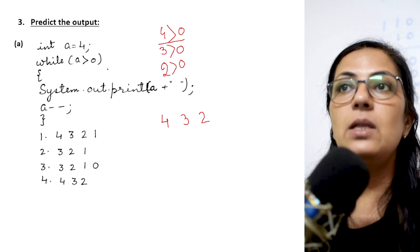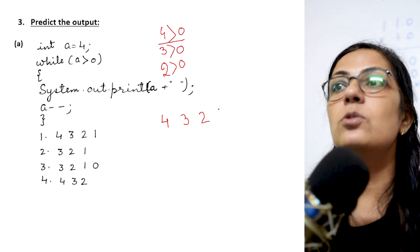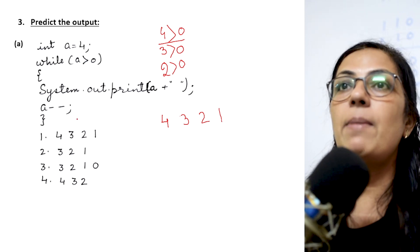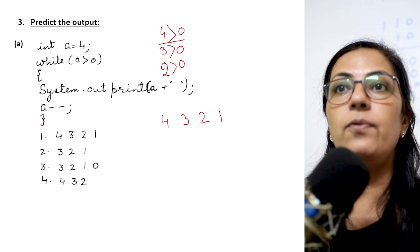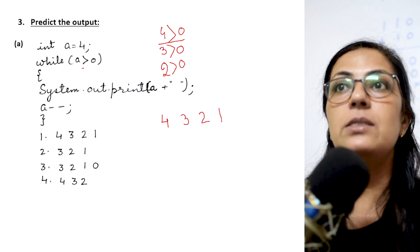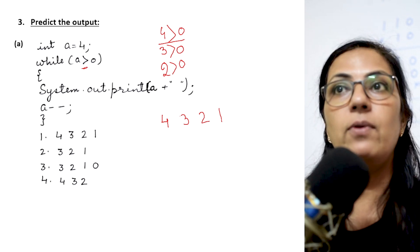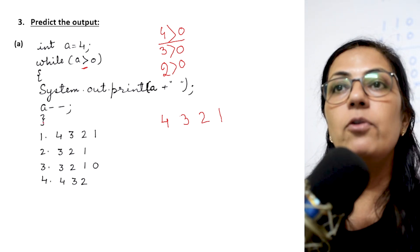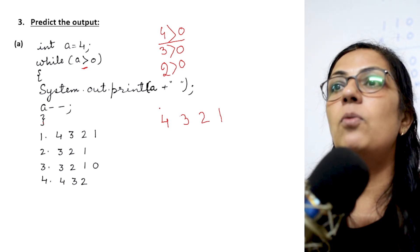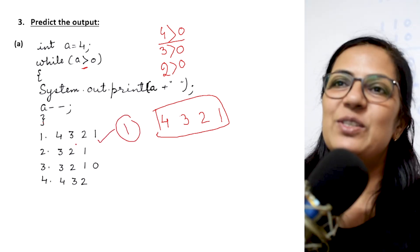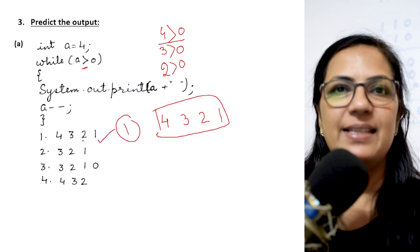The value of a will become 2. The value 2 is still greater than 0, condition is true. A that is 2 will be printed. A space will be printed. The value of a will become 1. 1 is greater than 0, yes, condition is true. So 1 will be printed. After that again a space is printed. A minus minus. Now the value of a will become 0. 0 is greater than 0, no. Here the condition will become false and it will not enter into the body of while loop. So your output after execution of this loop will be 4, 3, 2, 1. So option 1 here is the correct answer.